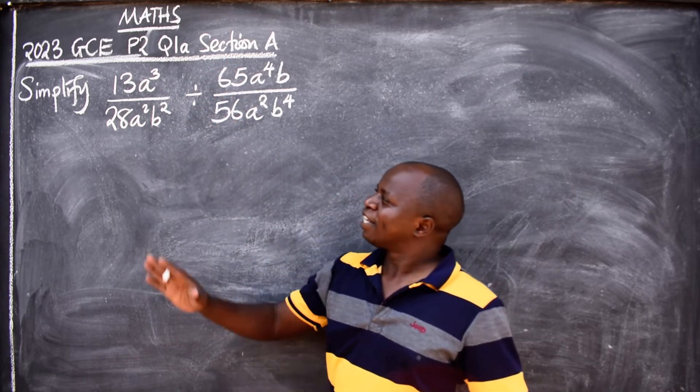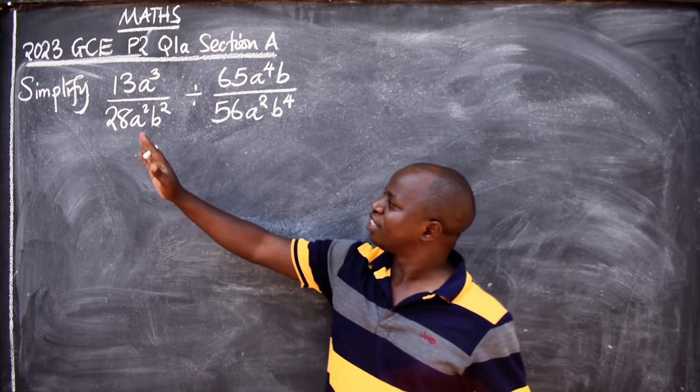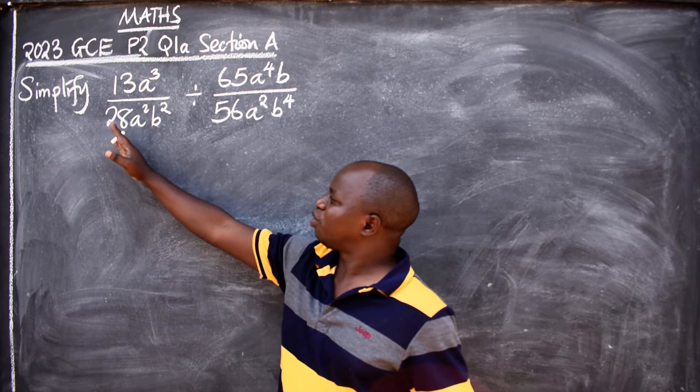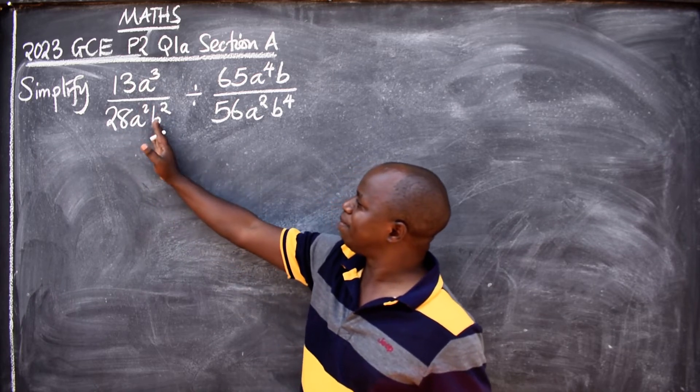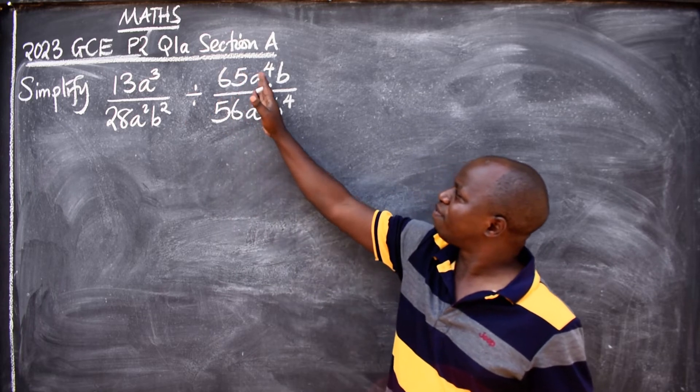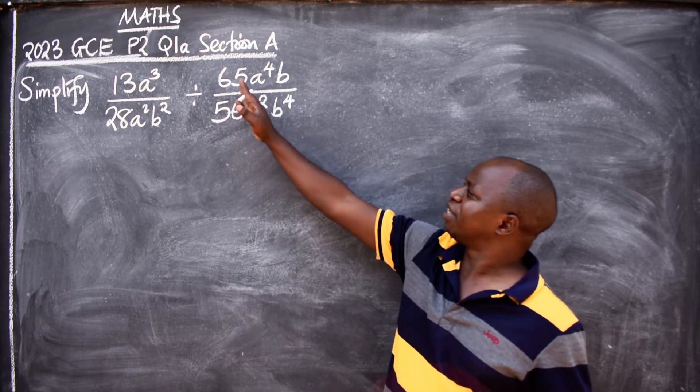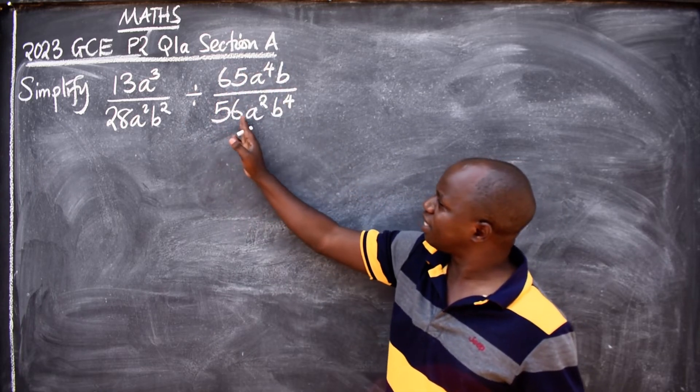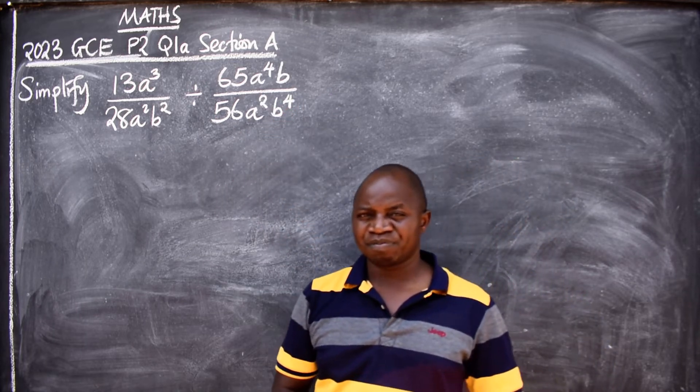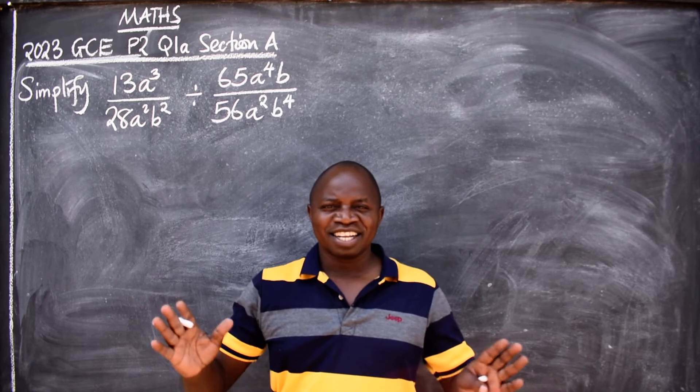Let's look at the question: simplify 13A³ divided by 28A²B² divided by 65A⁴B divided by 56A²B⁴. That was the question.